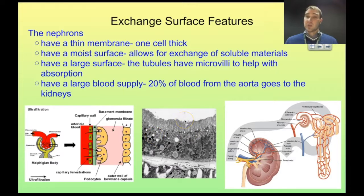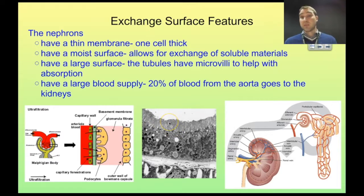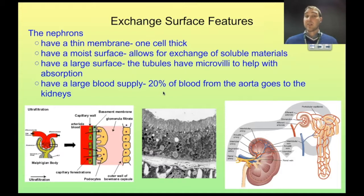The microvilli, which we saw when we looked at villi in the intestines, increase the surface area so there's a lot more area over which exchange can occur. Reabsorption can occur quicker because of these microvilli providing a large surface area. The last thing is the kidneys have a large blood supply — 20% of the blood from the aorta goes directly to the kidneys. So for every heartbeat, 20% of that blood goes to the kidneys, meaning there's high blood pressure, lots of blood being filtered, and lots of reabsorption happening back into the blood.